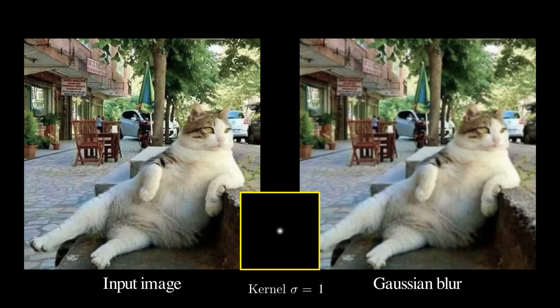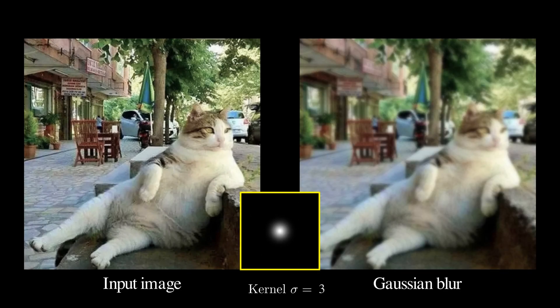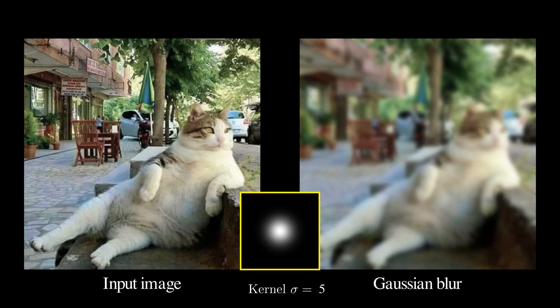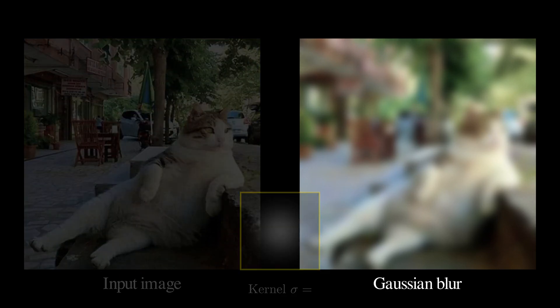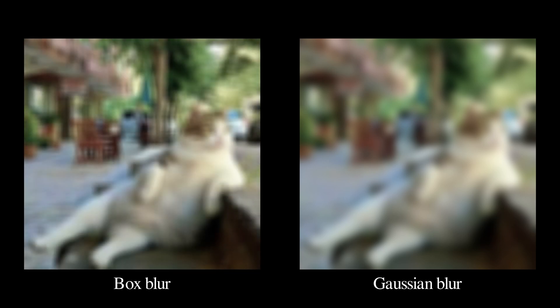This is called Gaussian filter. We can control the amount of blur using the standard deviation of the Gaussian kernel. A larger value creates a blurrier image. Now let's compare the result of box blur with that of Gaussian blur. The difference is clear. Gaussian blur is much smoother.